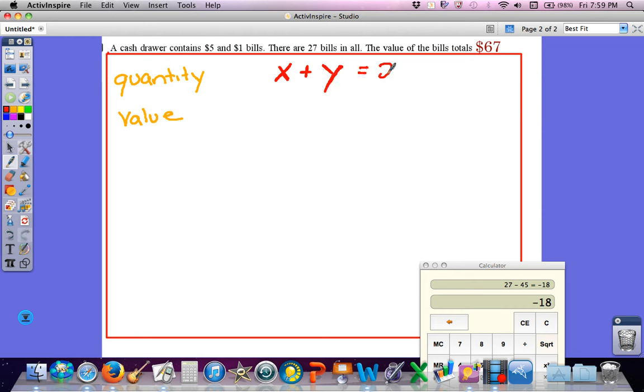And however many I have, that total is going to be 27. If I have 20 $5 bills, then I have 7 $1 bills. If I had 15 $5 bills, then I would have 12 $1 bills. So that's my quantity. Now the value of these bills, however many $5 bills I have, they're each worth $5, and however many $1 bills I have, they're each worth $1. The total value of this is $67.